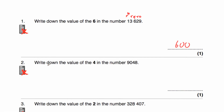Question number 2 says to write down the value of the digit 4 in the number 9,048. As you can see the 4 is in the tens column, so it represents 40. And even as we said 9,048, so we know it's 40.